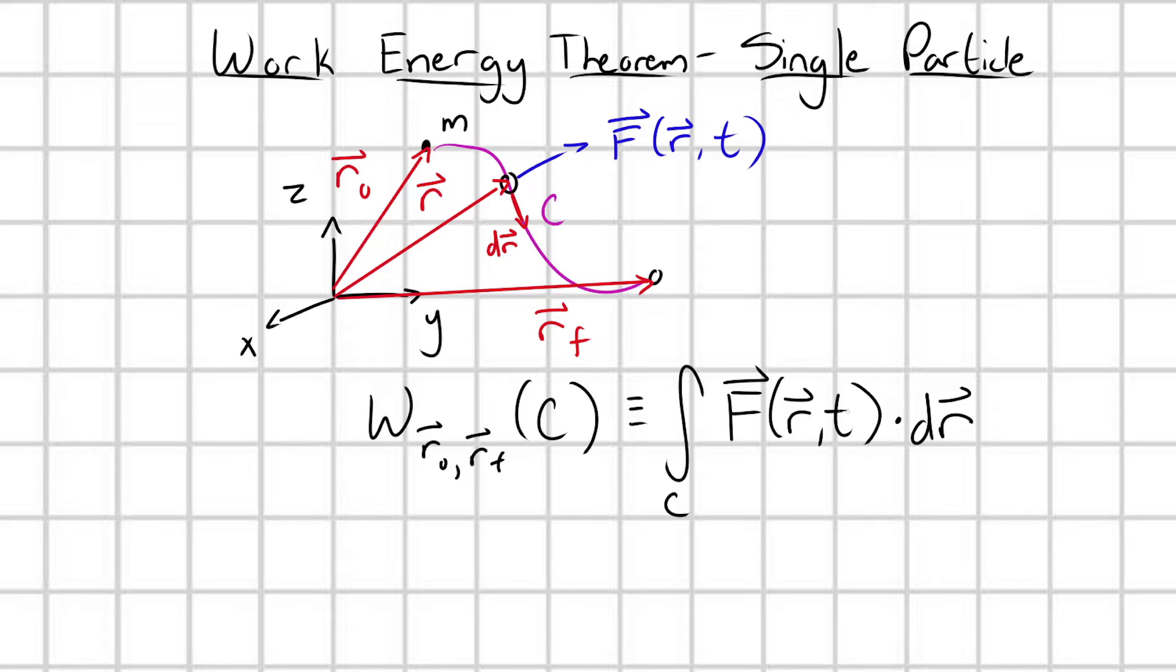Work on our particle as it goes from R0 to R final by traveling this particular path C is defined as the path integral of F of R, comma t dot dr. Alright, a couple things to note here. What's one of the first things that we see? I have two vectors that are being dotted together in this integral, and they're producing out a scalar. That makes sense. Dot products between two vectors produce scalars.